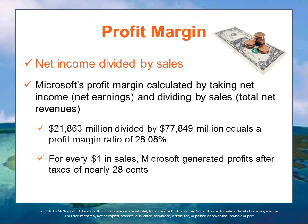Profit margin is computed by dividing net income by sales. This shows the percentage of overall profits earned by the company — the percentage of every dollar of revenue that you get to keep as an owner. It's based solely upon data from the income statement. The higher the profit margin, the better the cost controls within the company, and the higher the return on every single dollar of revenue.